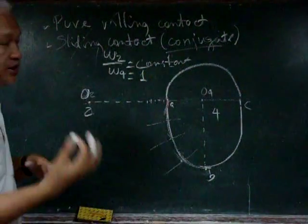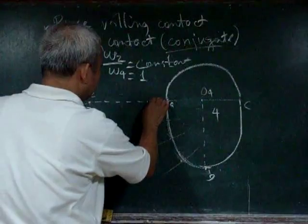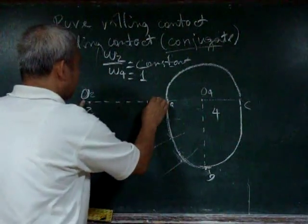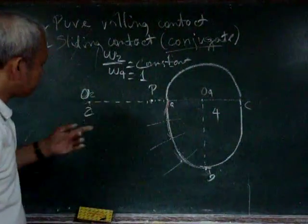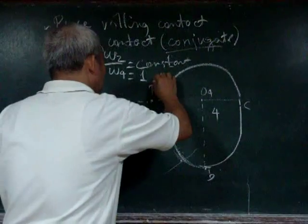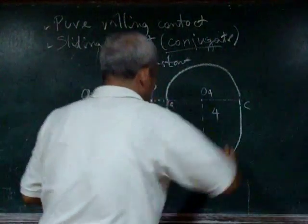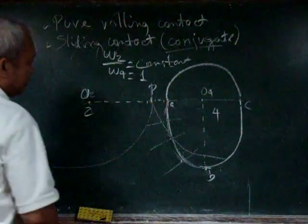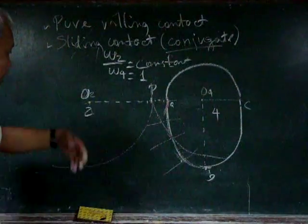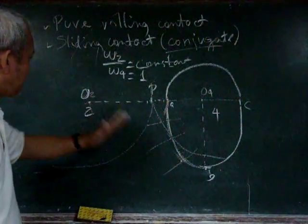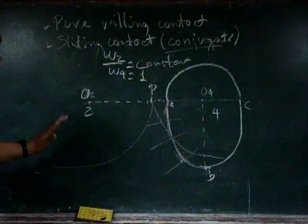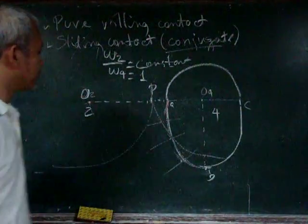And that means our pitch point must be in the middle. And the pitch point will allow us to draw our pitch circle. So the pitch circle now can help us determine the shape of our body 2, which is in conjugate with body 4.